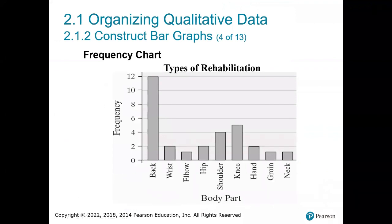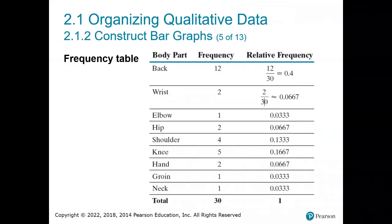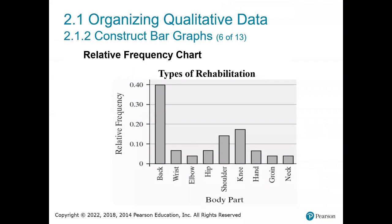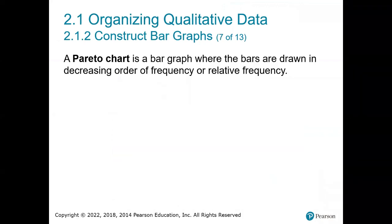This other example used a different program, so the order of body parts follows the order they were typed rather than alphabetical, but the graph still shows the same information. Another type of bar chart is a Pareto chart — it is a bar graph but a special kind. A Pareto graph is a bar graph where the bars are drawn in decreasing order of frequency.